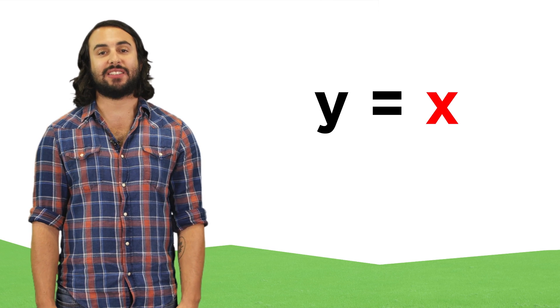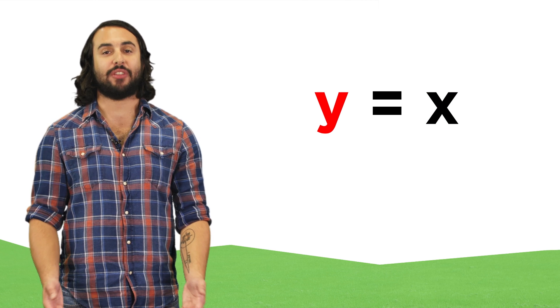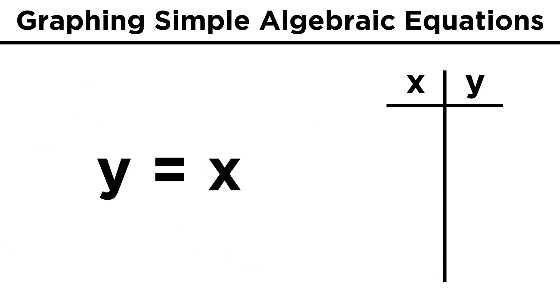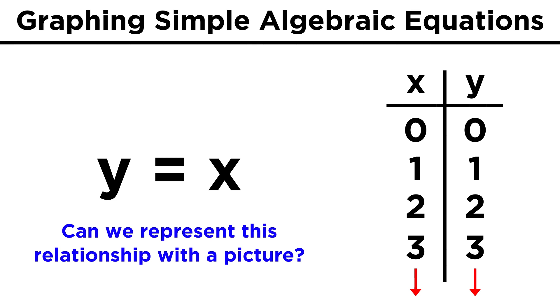This says that whatever x is equal to, y is equal to that too. So if we make a chart of x values and their corresponding y values, we get zero and zero, one and one, two and two. This could continue to infinity in either direction. Is there some way we can draw a picture that demonstrates this relationship?